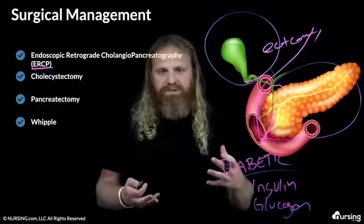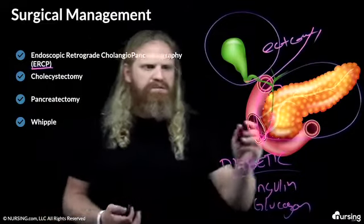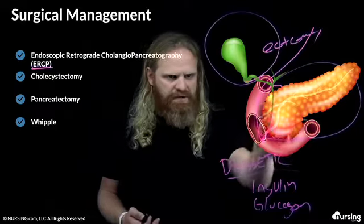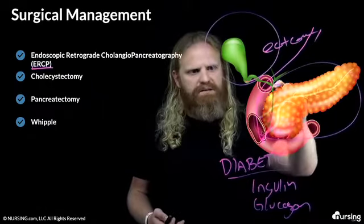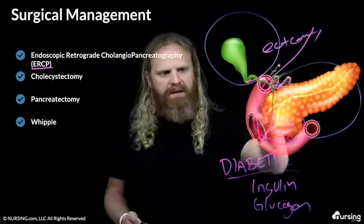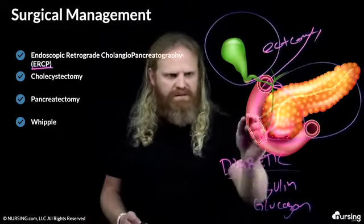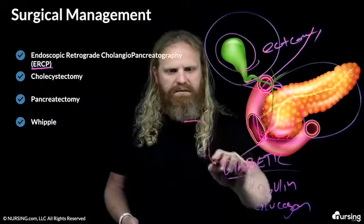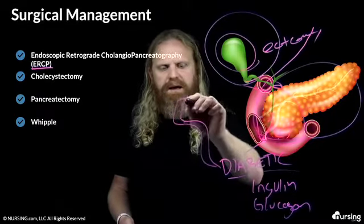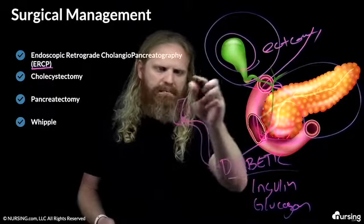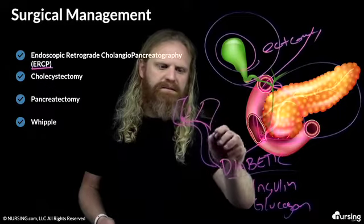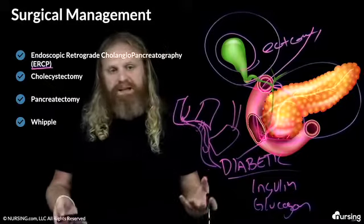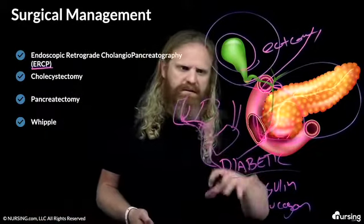One other complex procedure is the Whipple procedure, usually done for patients with pancreatic cancer. Pretend this is a lesion — a tumor inside the pancreas. They take off that piece of the pancreas, which severs the connection to the duodenum, so they also cut off a portion of the duodenum. Then they reconnect: feeding in the bile, what's left of the pancreas, and connecting the stomach a bit further down so food can come in and stimulate all those enzymes. It's a more advanced procedure for pancreatic cancer patients.